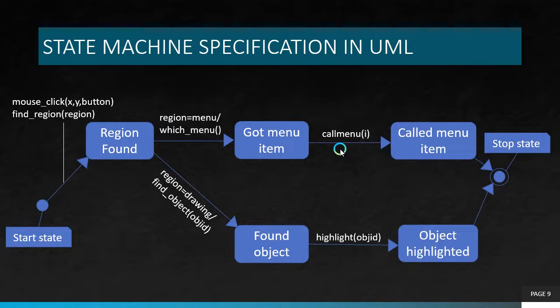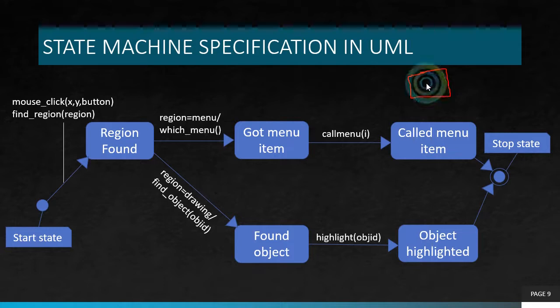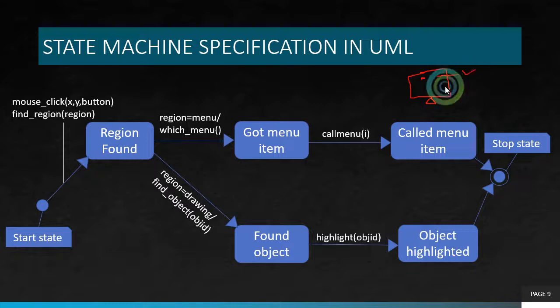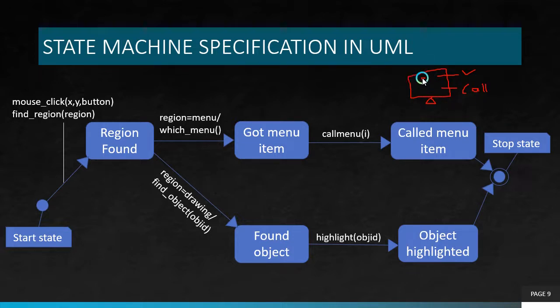Next, we have state machine specification in UML. We talked about behavioral description, and to implement it in a more descriptive manner, we look at state machine specification. Let's consider a scenario: I have a mouse and I am clicking at a specific region in my display. When I click a specific region, I have an option to select a menu. After selecting that menu, I have to call that menu. I have a display, a mouse, and I'm clicking on a particular region. I need to select a menu, then call that menu. Here we have a start state and a stop state.